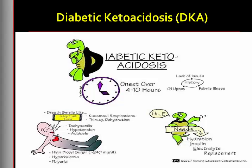Precipitating factors include illness and infection, inadequate insulin dosage, undiagnosed type 1 diabetes, poor self-management, and neglect. When the circulating supply of insulin is insufficient, glucose cannot be properly used for energy, and the body compensates by breaking down fat stores as a secondary source of fuel.